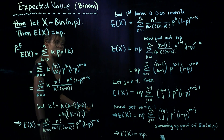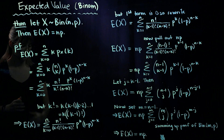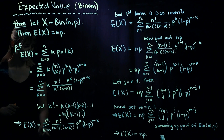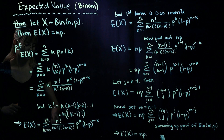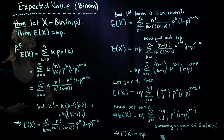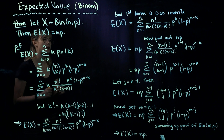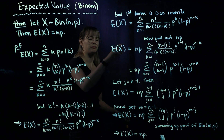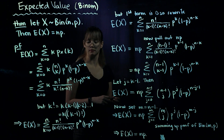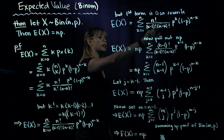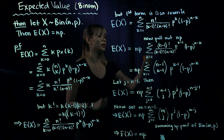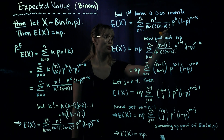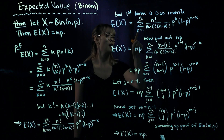When k equals 0, the first term of this sum is 0, so we can rewrite the sum starting from k equals 1 to n. The expression inside is n factorial divided by k minus 1 factorial and n minus k factorial, times p to the k times 1 minus p to the n minus k.